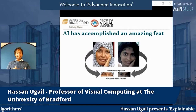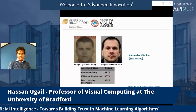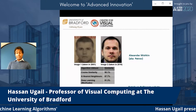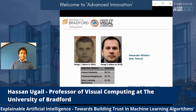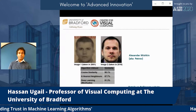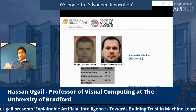I want to talk about some of the high-profile cases we've been working on using this face recognition system. One example is the Salisbury poisoning in 2018 — an international story. One day I received an email from Bellingcat, the online investigator, with two images, asking whether this was the same person. My face recognition system told me around the high 90s percent confidence that this is the same person.